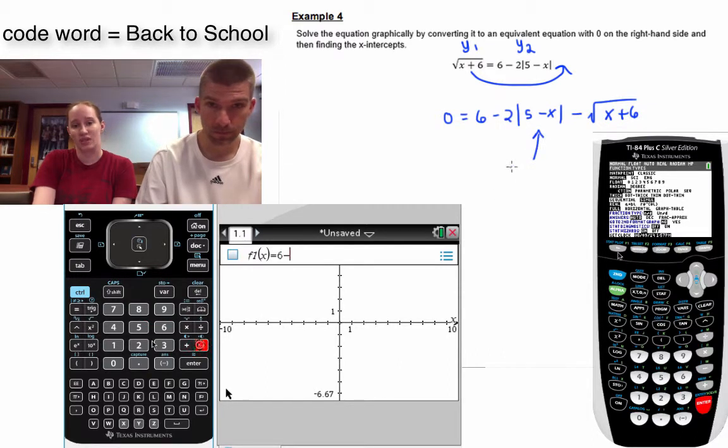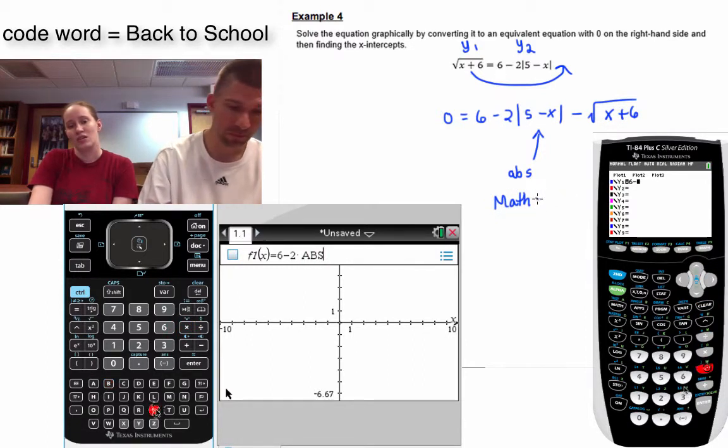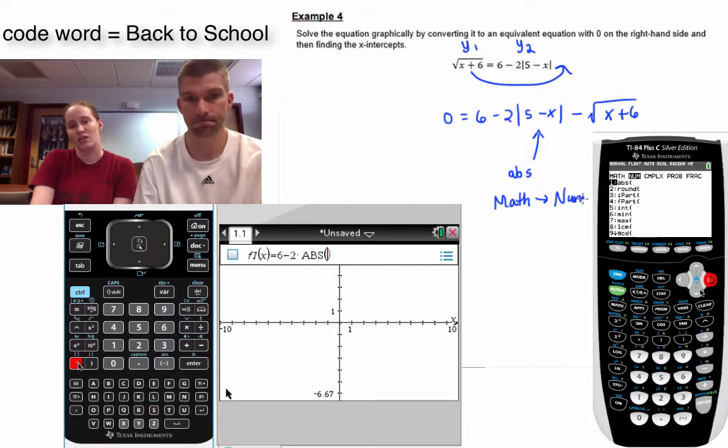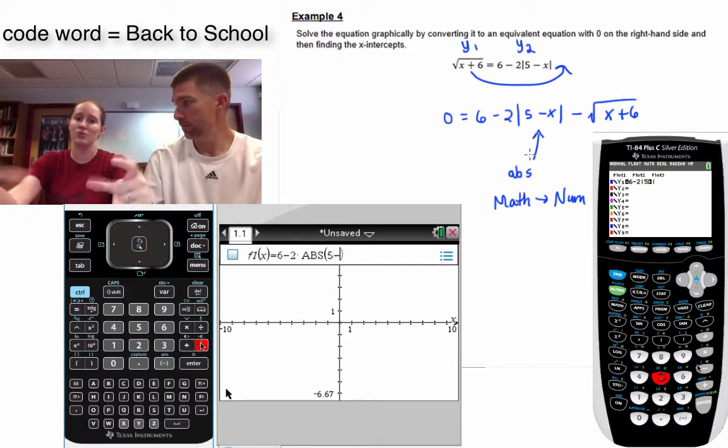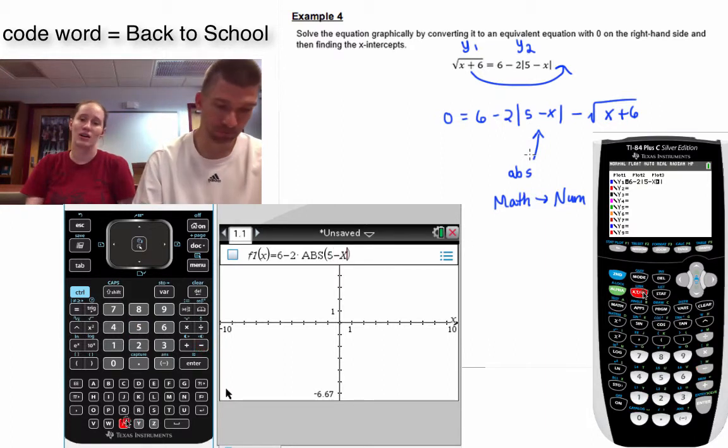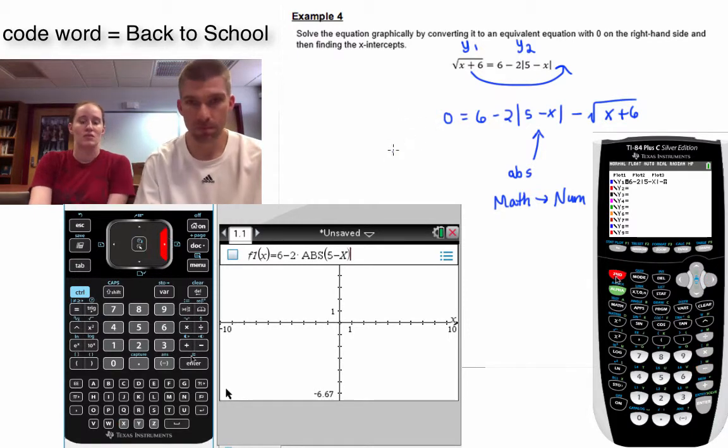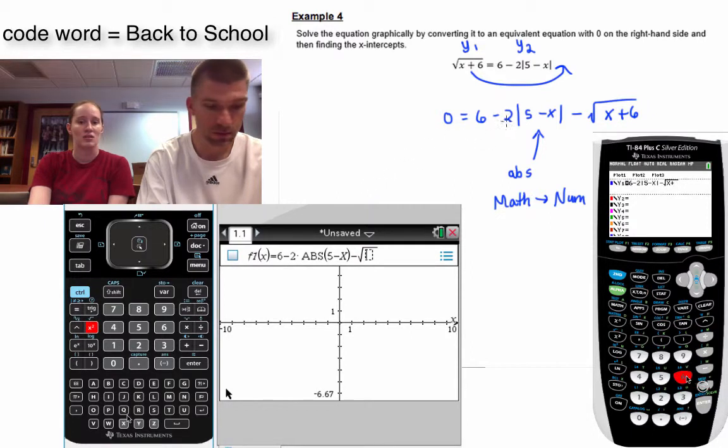This is a good opportunity for us to tell you that the absolute value button is in the math menu. If you're on a TI-83 or TI-84, it's math, then number, then abs—it's the very first one. On older calculators, it gives you abs with parentheses. Newer calculators put the bars. On the Inspire, you can just type in abs. We're good to go.